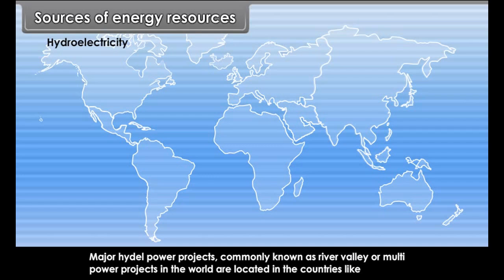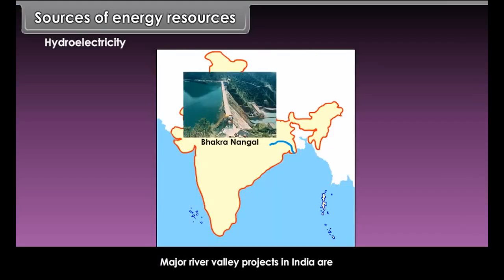Now we will study these sources of energy in detail. Hydroelectricity is obtained by running water which drives turbines. The force of falling water which is used for generating electricity is called hydroelectricity. Major hydro power projects, commonly known as river valley or multi-power projects in the world, are located in countries like Sweden, Norway, Switzerland, Canada and the USA. Major river valley projects in India are Bhakra Nangal.